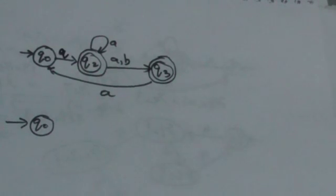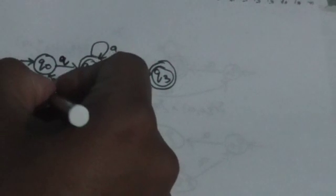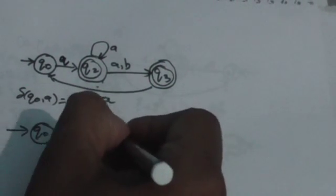Hello friends, welcome to this tutorial. In this tutorial, we will convert this NFA into DFA. The first step is to take the initial state as it is. The initial state of NFA is Q0, so the initial state of DFA will also be Q0. Now find its transition for all possible input symbols — here we have only two input symbols, A and B. When we apply A to Q0, we get state Q2, so we add this transition to the DFA.